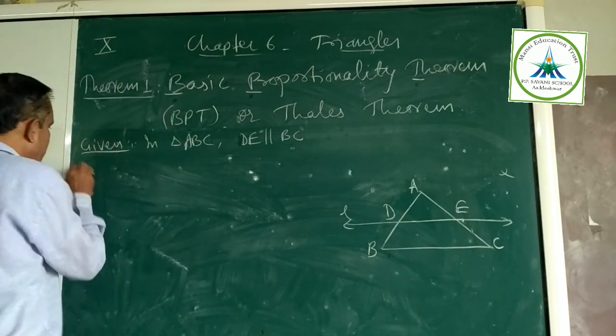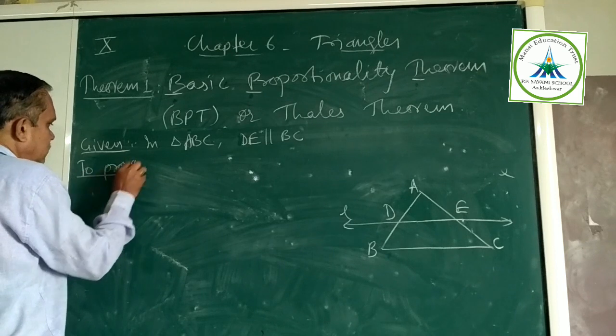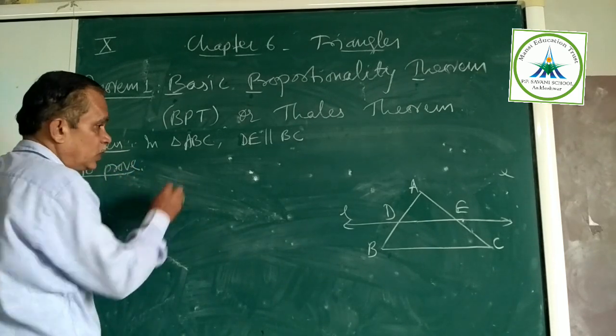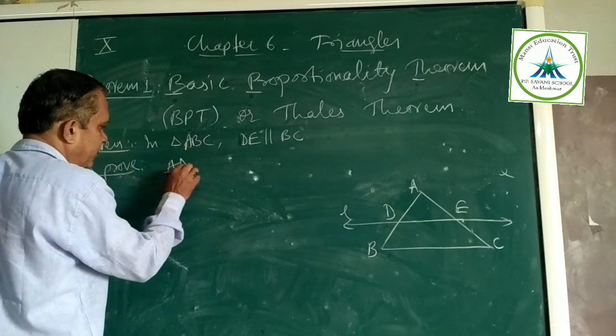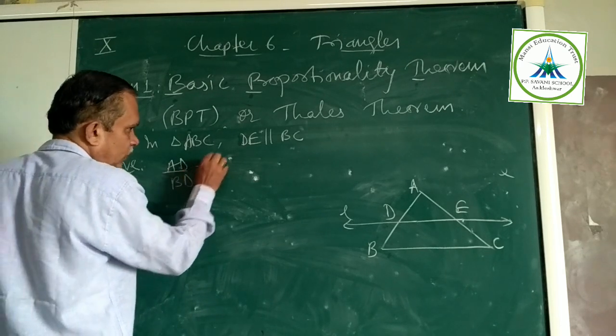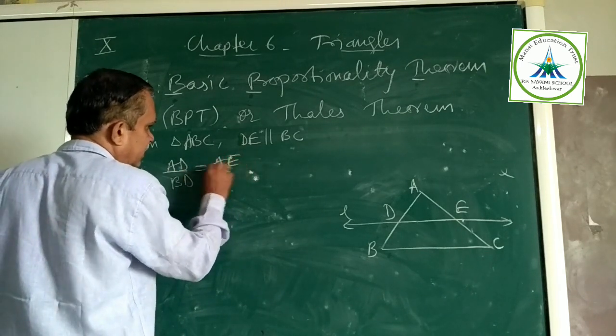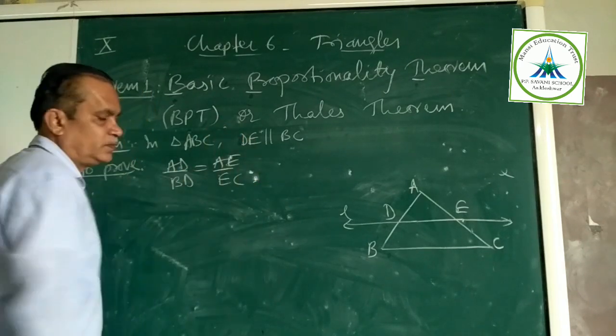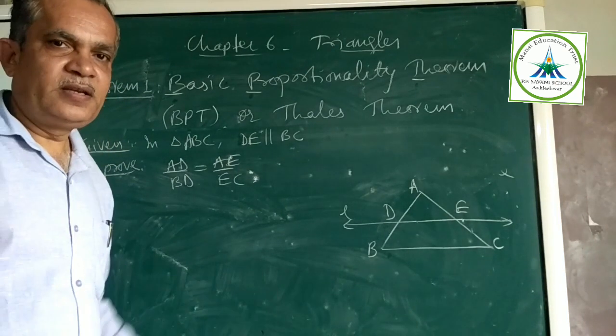To prove: AD upon BD equal to AE upon EC. Very simple, right?